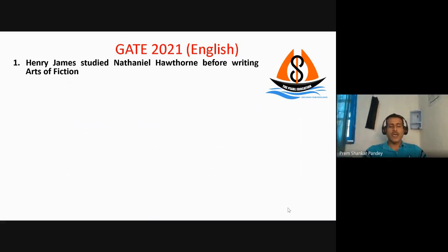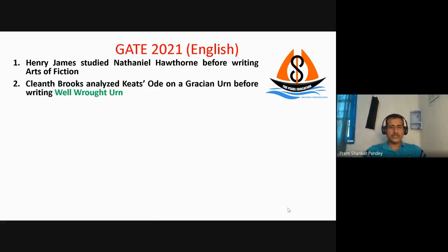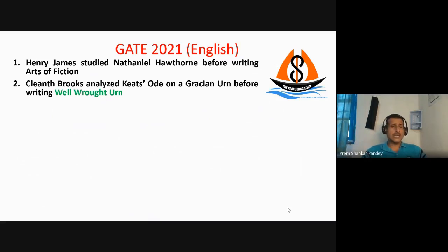Coming to the second question: Cleanth Brooks analyzed which author before writing his essay 'Well Wrought Urn'? He analyzed various authors — William Wordsworth, Tennyson, and Keats — but basically his full-length study was on John Keats's 'Ode on a Grecian Urn.' So John Keats is the right answer.